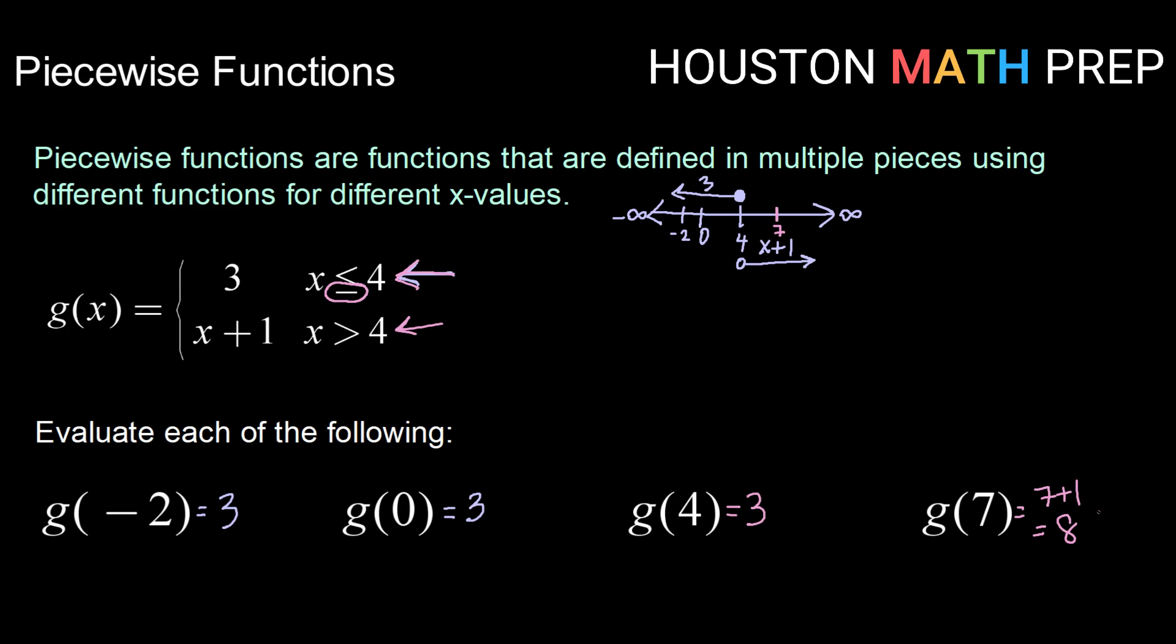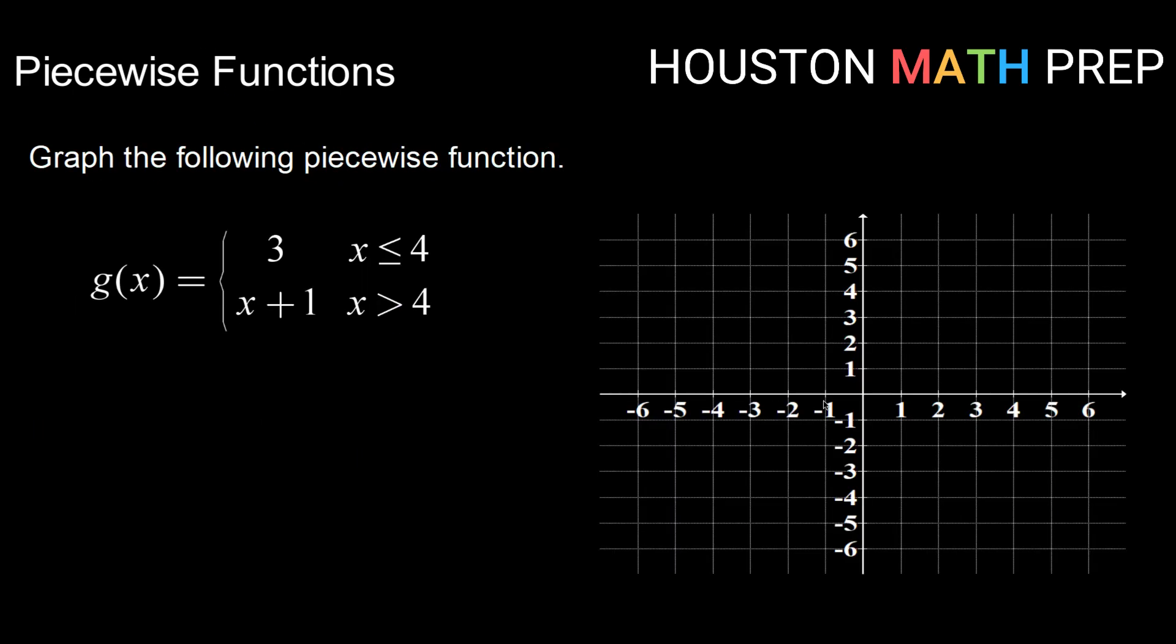Now another thing we might want to do with piecewise functions is we might want to graph them. So let's take a look at this g of x and figure out how can we graph this function. Well really all we need to do is graph each piece separately, connecting at wherever they are defined or wherever the split is.